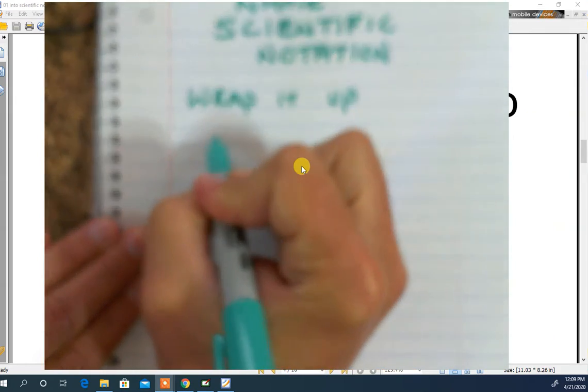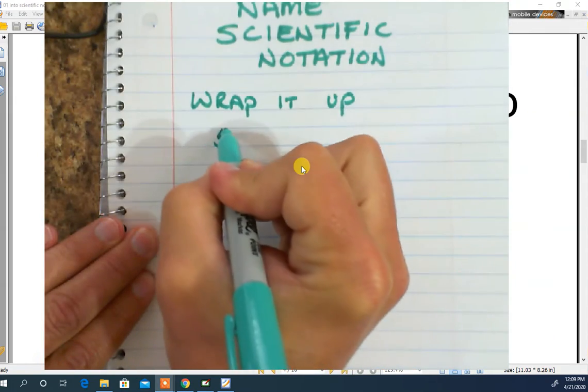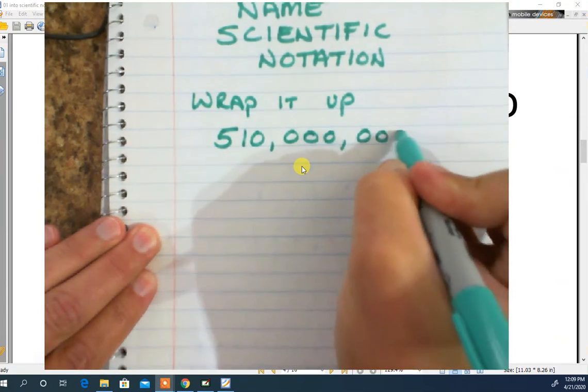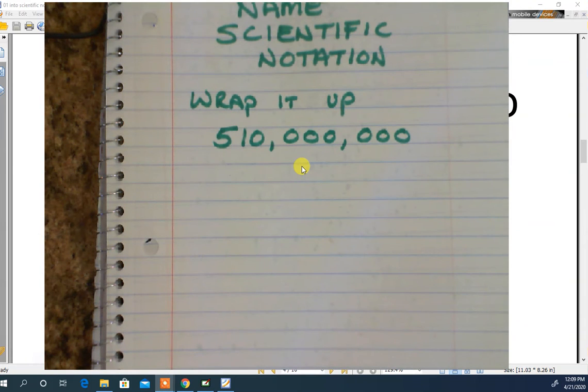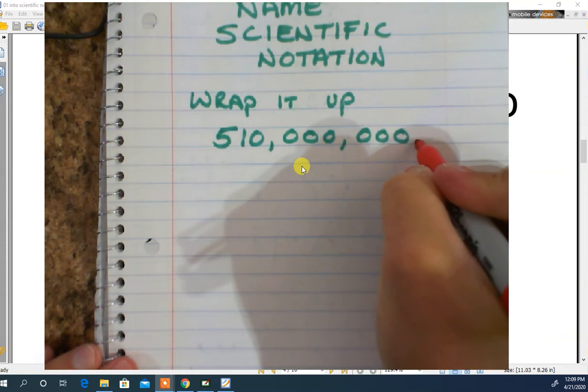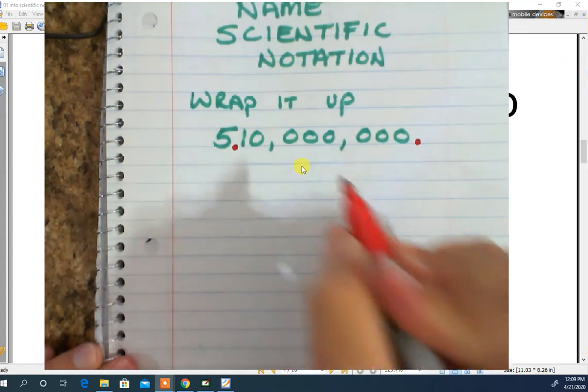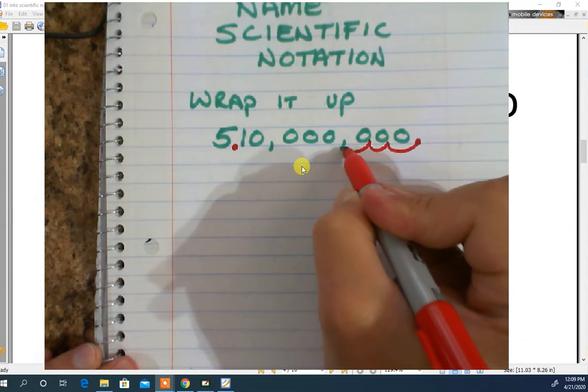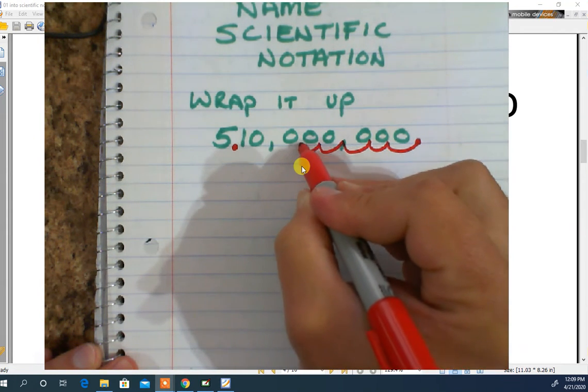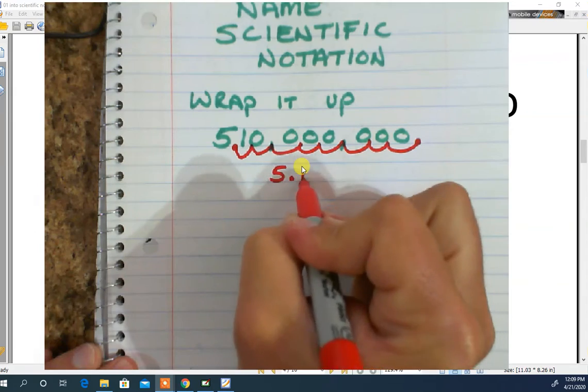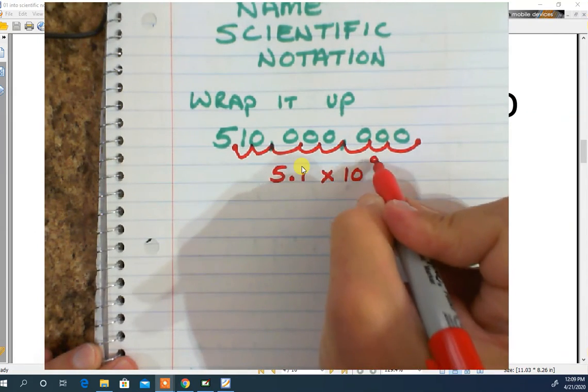So if I have, let's go with 510 million, and I'm going to wrap that thing up. So what do I do? I find my decimal and I move it almost to the front. And I count those jumps. 1, 2, 3, 4, 5, 6, 7, 8. 5.1 times 10 to the 8th.